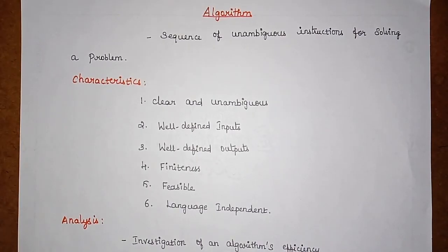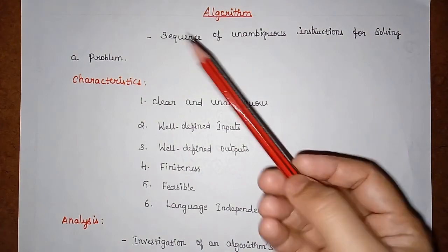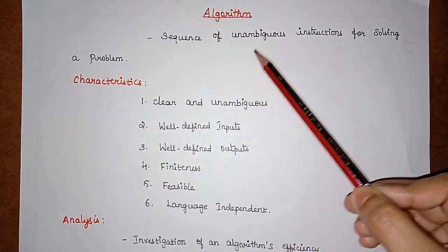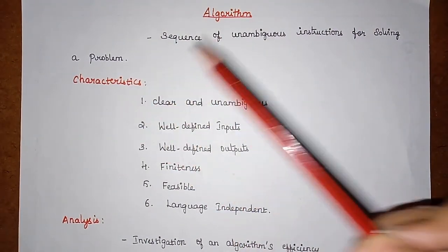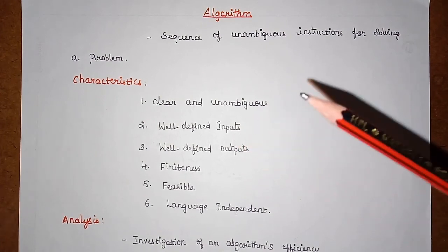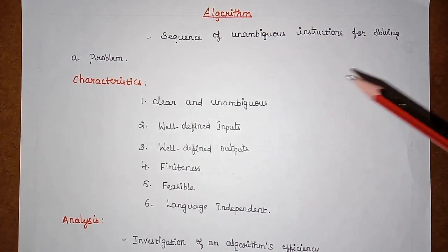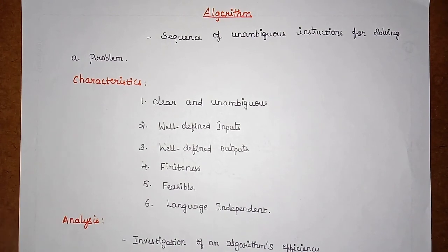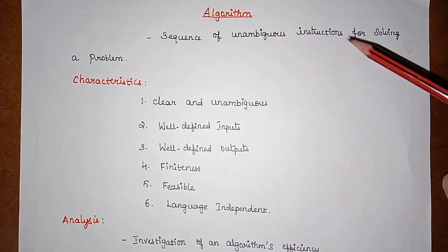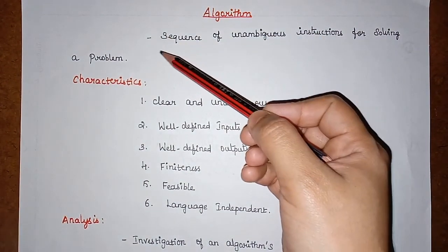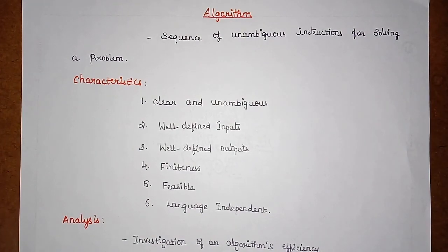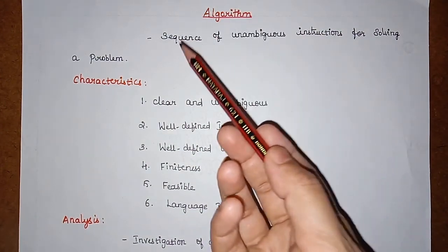An algorithm is generally described as a step-by-step instruction used to solve a problem. The definition is: an algorithm is a sequence of unambiguous instructions for solving a problem. The instructions should not lead to any confusion for the programmer, and they should be in sequential order — if we change the sequence, we won't get the required output.